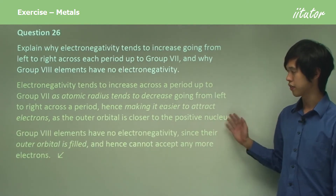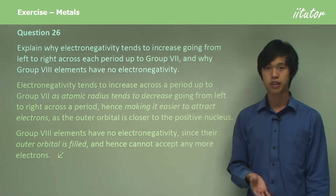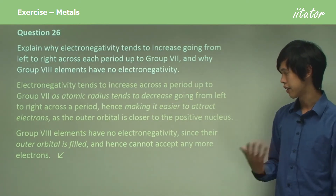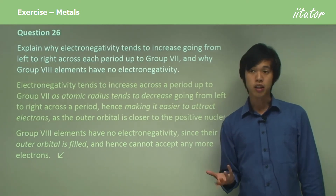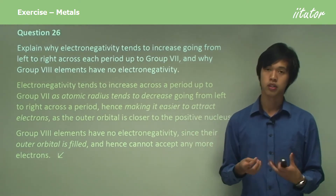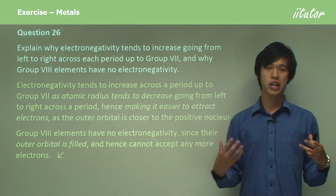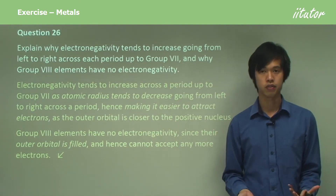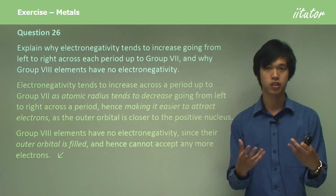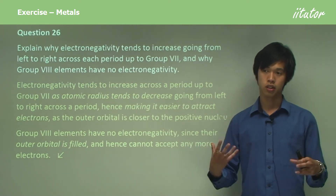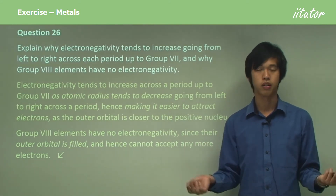Group 8 elements have no electronegativity since their outer orbital is filled, and hence cannot accept any more electrons. Electronegativity is the tendency for electrons to be held closer to an atom in a bond — so they have to be bonded. Obviously if you can't form a bond, you can't have electronegativity. Group 8 can't form any bonds because they're happy to just live as noble gases, so they have no electronegativity because they cannot form any bonds.